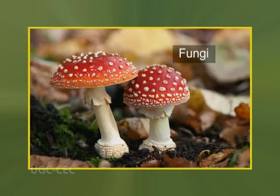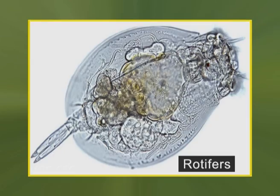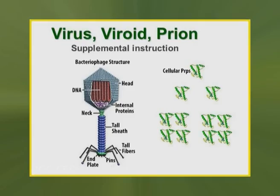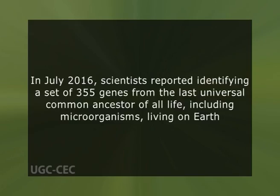This group also contains some species of fungi, algae, and certain microscopic animals such as rotifers. Many macroscopic animals and plants have microscopic juvenile stages. Some microbiologists also classify viruses and viroids as microorganisms, but others consider these as non-living. In July 2016, scientists reported identifying a set of 355 genes from the last universal common ancestor of all life on Earth.